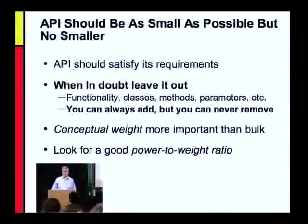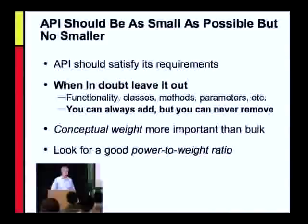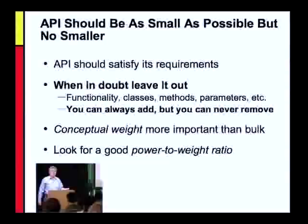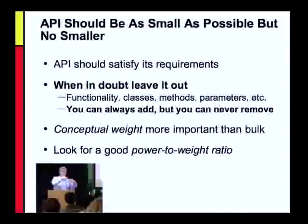When thinking about the size of an API, the conceptual weight is more important than the bulk — the number of methods, classes, parameters. What's really important is the number of concepts: when learning this API, how many different things do I have to learn about? One of the best ways to decrease conceptual weight is reusing interfaces. In the collections framework, there are many implementations of the Set interface — HashSet, TreeSet, LinkedHashSet, concurrent sets — but you don't have to learn any new APIs. You learn the Set API and we can add functionality without making you learn anything new. You want to be able to do a lot without learning a lot.